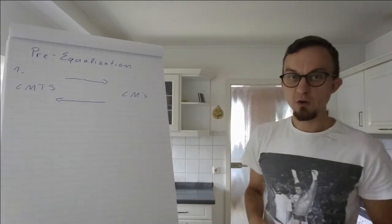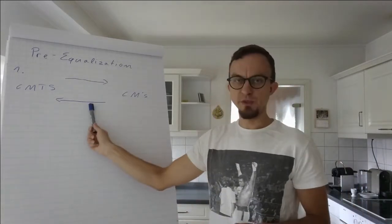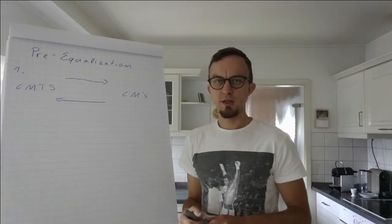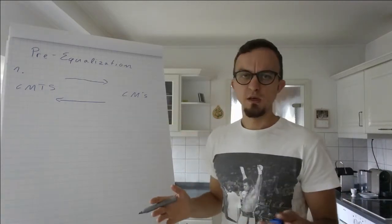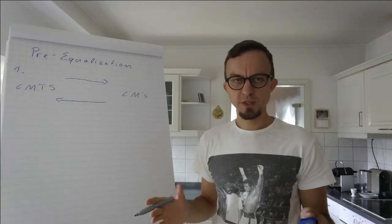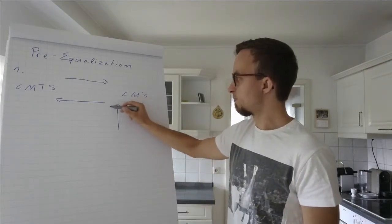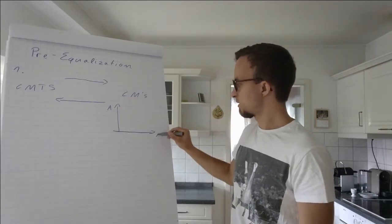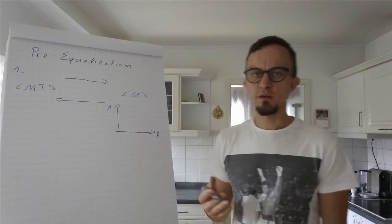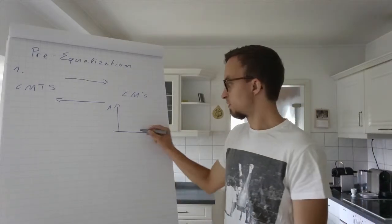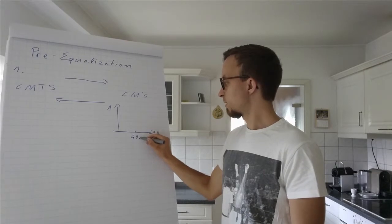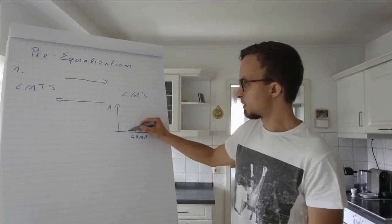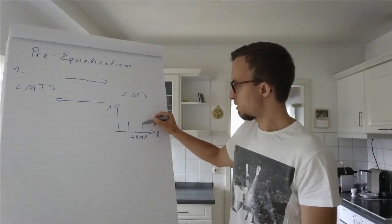Pre-equalization works in the upstream. When a cable modem sends a signal, let's assume we are in the frequency space, which means we have the power of our signal and the frequency range. Let's say we are sending at 40 megahertz with a channel width of 6.4 megahertz. That's our channel where we are sending.